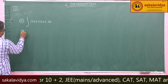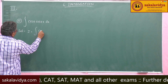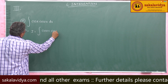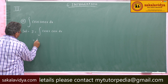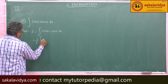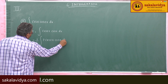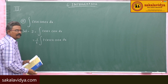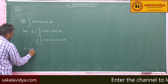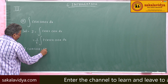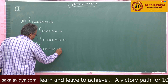I is equal to integral cos 2x · cos x dx. Multiply by 2 and divide by 2, giving 1/2 integral of 2 cos 2x · cos x dx. This is in the form of the 2 cos A cos B formula: 2 cos A cos B equals cos(A minus B) plus cos(A plus B).